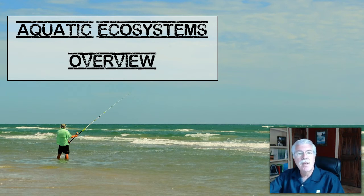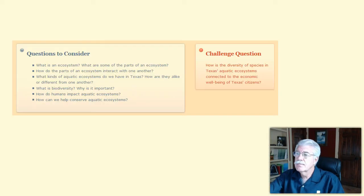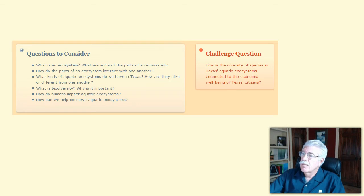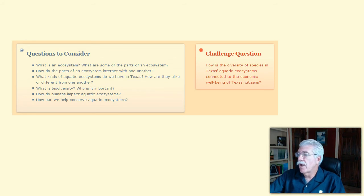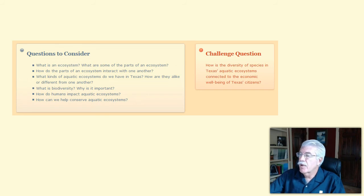Today's lesson is an overview of aquatic ecosystems. Each ecosystem I describe in this lesson will be covered in greater detail in following lessons. To help focus today's lesson, here are a few questions to consider: What is an ecosystem? What are some of the parts of an ecosystem? How do the parts of an ecosystem interact with one another? What kinds of aquatic ecosystems do we have in Texas? How are they alike or how are they different from one another? What is biodiversity? Why is biodiversity important? How do humans impact aquatic ecosystems? And how can we help conserve aquatic ecosystems?